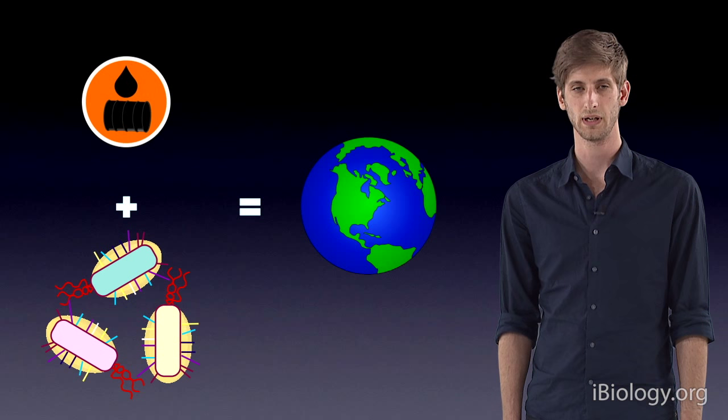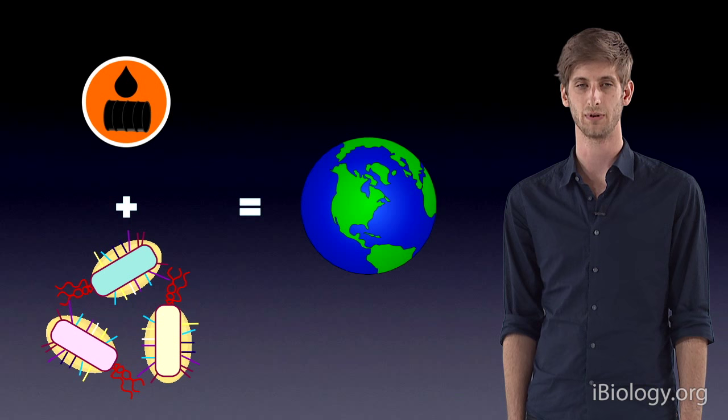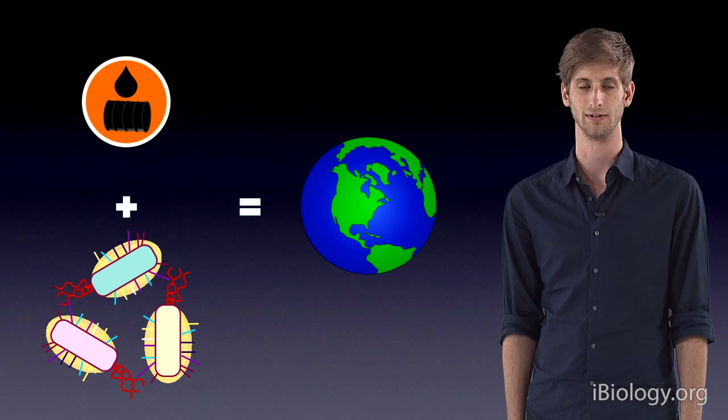Instead, we could implement several strains of bacteria, each able to carry out a single step in the process, passing along the intermediate substances to the next bacteria. In this way, we could overcome the problem.